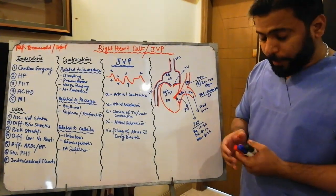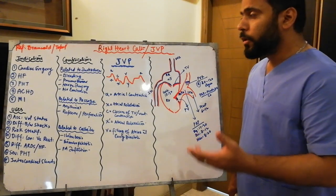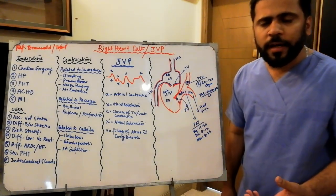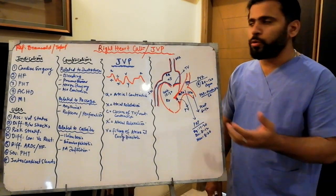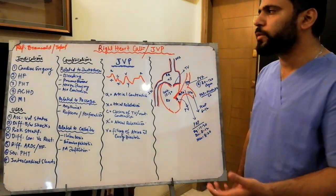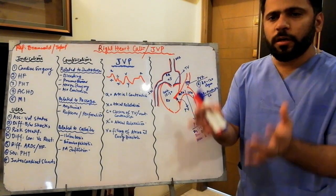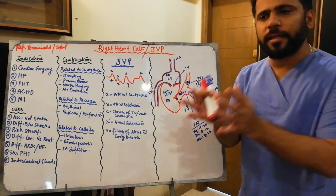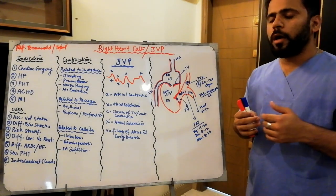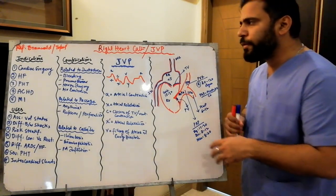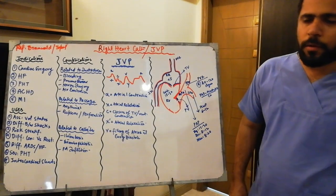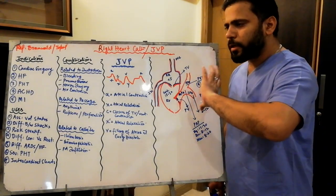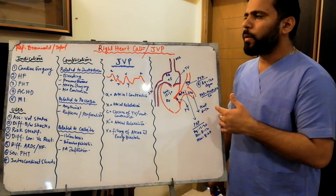Assalamualaikum, it's your Dr. Ness, and we are here on a very important topic of cardiology. Right heart cath and JVP is the crux of cardiology. If you know how to do the right heart cath, when to do it, why to do it, and how to interpret it, you will cover a major portion of adult cardiology, adult congenital heart diseases, and pediatric cardiology.